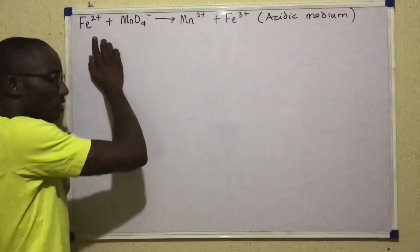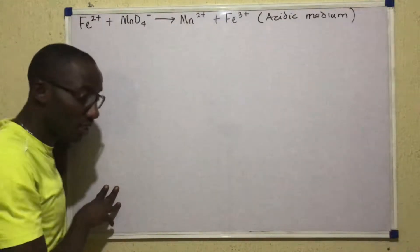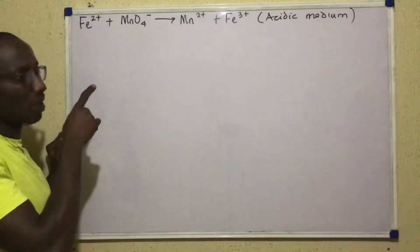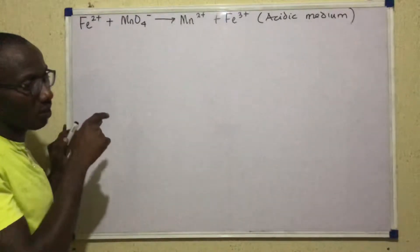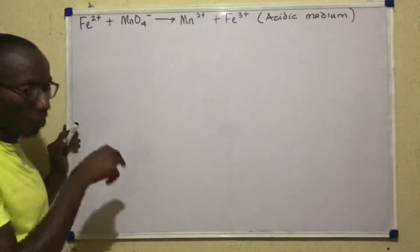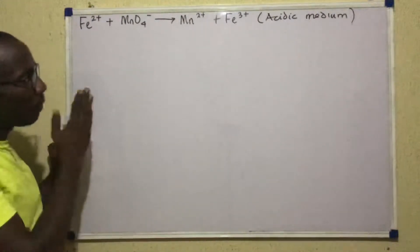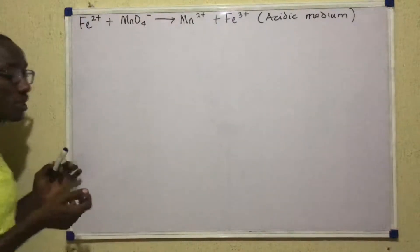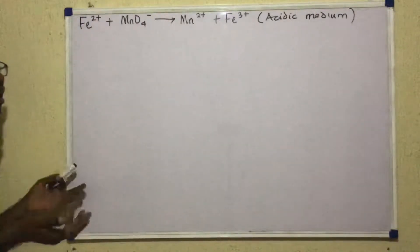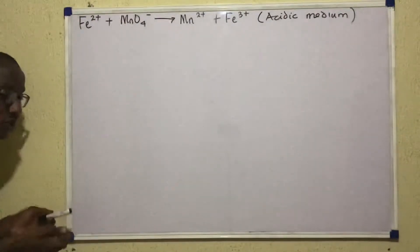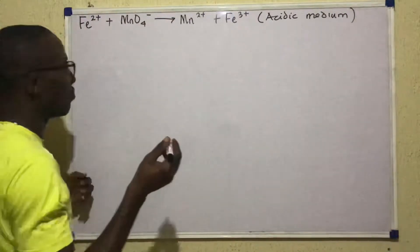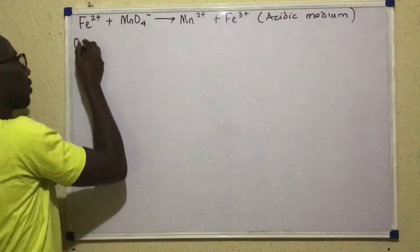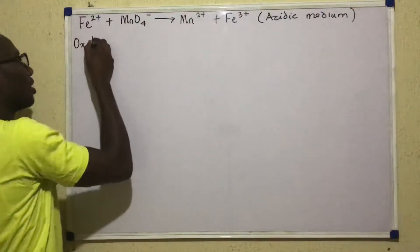One of the species there is a reducing agent and it's undergoing oxidation, while the second is an oxidizing agent and it's undergoing reduction. So we split them into two. We call each of the resulting equations a half — so you have the oxidation half and the reduction half.